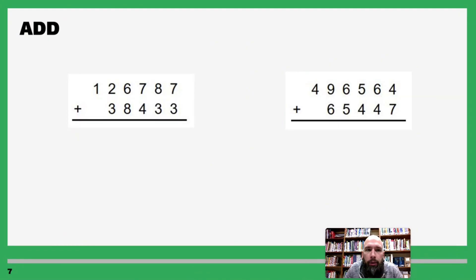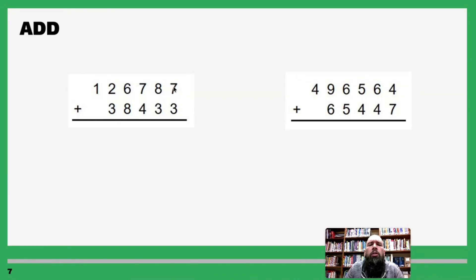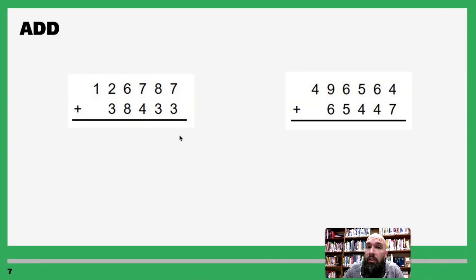We just keep adding more numbers — adding more digits doesn't make it more difficult, just more to do. So we have 126,787 plus 38,433. Same rules apply.